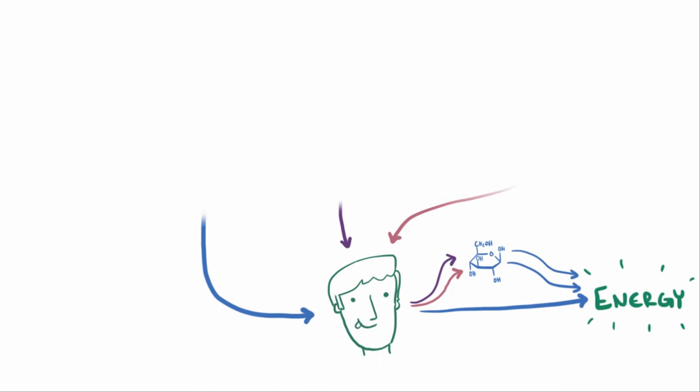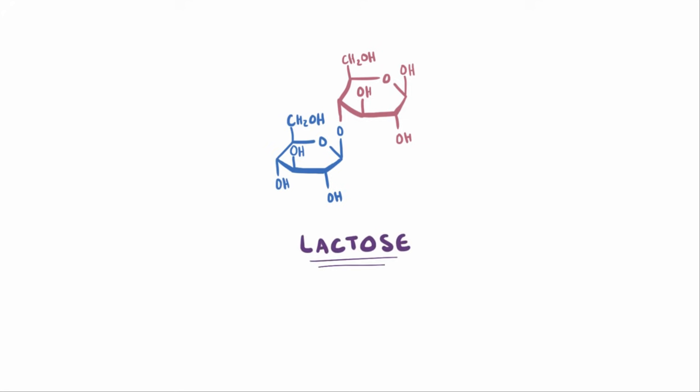Usually carbohydrates aren't in the monosaccharide form when we ingest them, and a lot of what we take in are in the disaccharide form, and one notorious disaccharide that tends to cause serious gastrointestinal distress for a lot of people is lactose. Now lactose is a disaccharide that's made up of a glucose molecule and a galactose molecule.